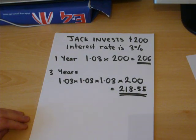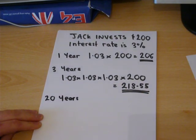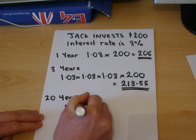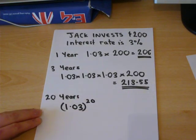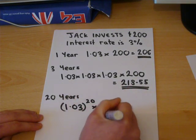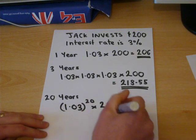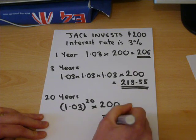Now, if you wanted to do after a lot of years, e.g. after 20 years — this could be some high interest savings account — then as a shortcut, we can use powers. So, 1.03 to the power of 20, which covers all 20 years, times by the 200. This will give us the total amount which Jack will have after 20 years, which on a calculator gives us £361.22.